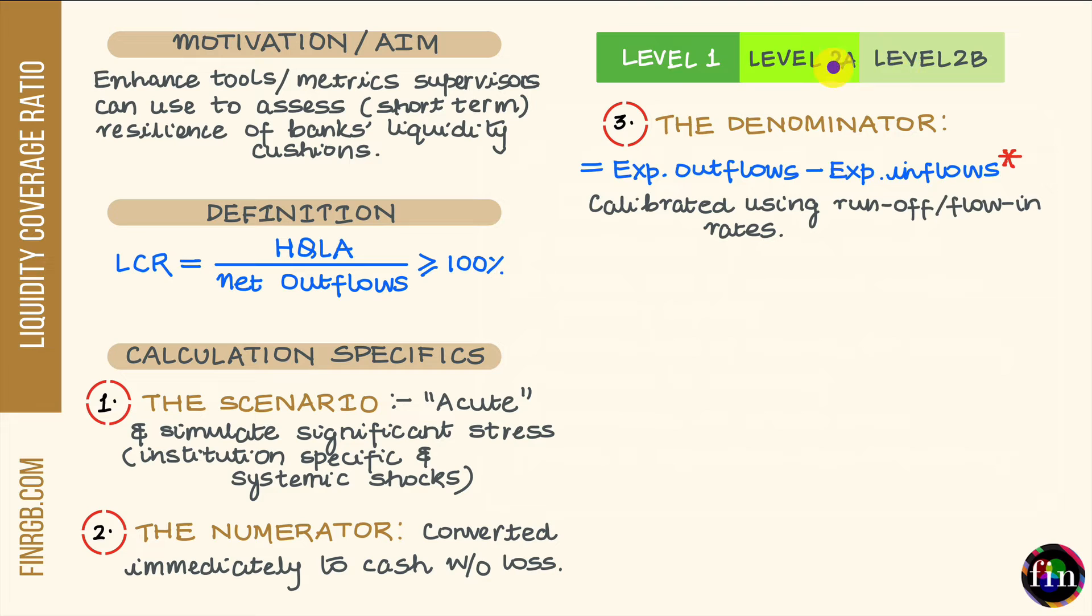Broadly speaking, we're talking about two categories here: level one and level two. Level one assets are truly high quality liquid assets. This category includes assets such as cash and bank notes, central bank reserves, and marketable securities which are issued by or backed by the central bank. The assets in this category level one are assigned a haircut of 0%.